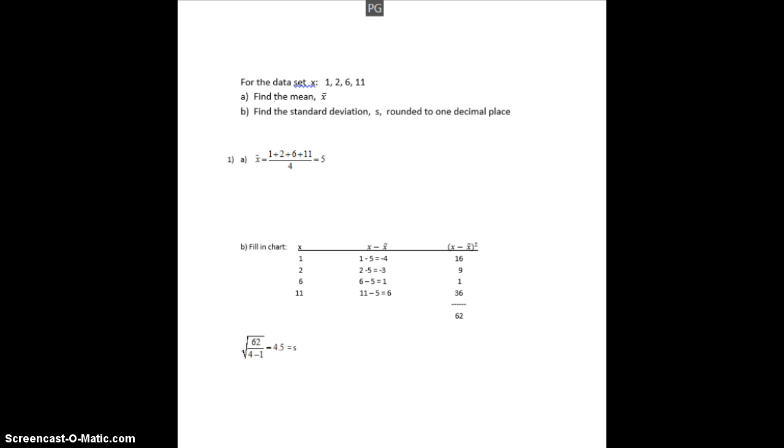So let's look at this example here. We have four numbers: 1, 2, 6, and 11. To get the mean, you add the four numbers together, divide by four, and that gives you a mean value, an x-bar value of 5. Now, to get the standard deviation, I'm going to show you later on how to get it from the calculator. But here, let's come up with three columns. X are the actual data values: 1, 2, 6, and 11.